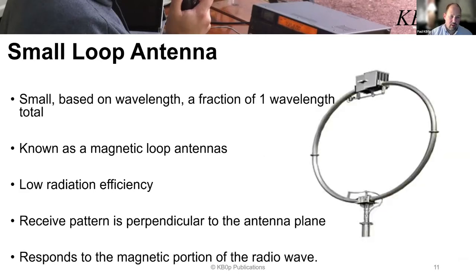Now this is a small loop — physically much smaller. A small loop is again based on wavelength, so it's a fraction of a wavelength — maybe one-tenth of a wavelength or something very small. For instance, a full-wave 80-meter loop would be 272 feet, but an 80-meter small loop used for receiving might be one-tenth of that — maybe only around 20 feet. Very small as far as wavelength is concerned.